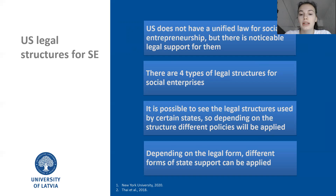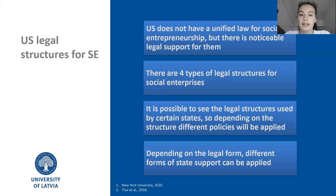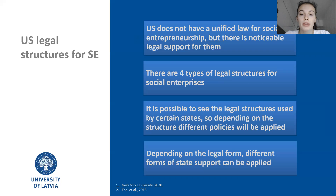Each legal form provides its own statutes, meaning it has different policies, different recommendations, also some aid programs, and so on. In comparison with the Latvian system where there is one uniform law, the US system is more competitive because it provides the opportunity to choose from different legal forms. However, it is still difficult to compare the Latvian and United States cases because the legislation system is totally different in these two countries.